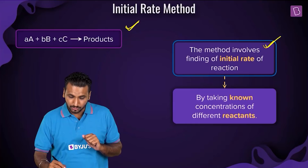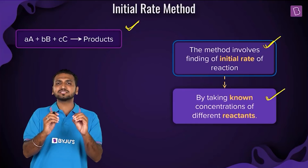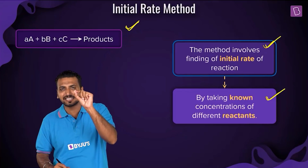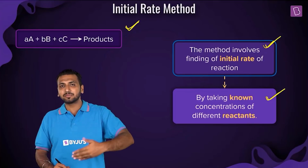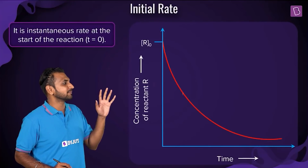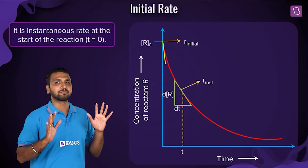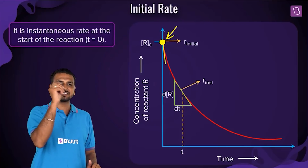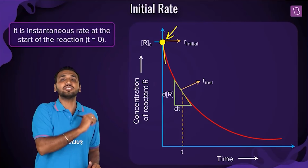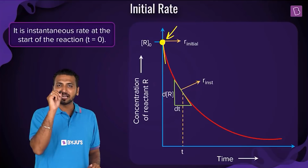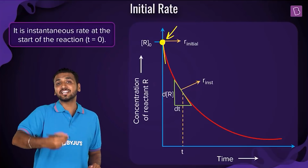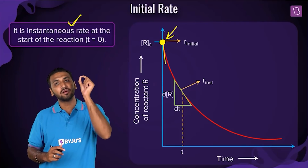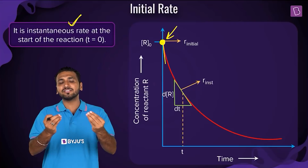The rate at that initial point — you take the known concentration of the reactant and observe the rate at that point. To understand the value of initial rate, look at the graph between concentration of reactant versus time. The concentration is slowly coming down. Focus at the very start — that is the time when the reaction started, and the rate at that point is known as the initial rate. We are taking into consideration the instantaneous rate of the reaction at that initial point.